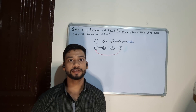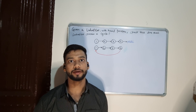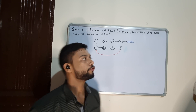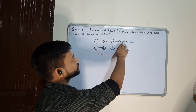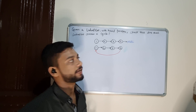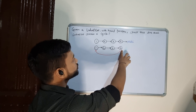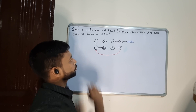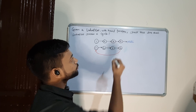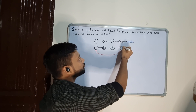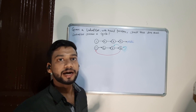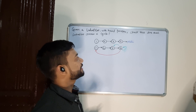The problem statement is: we are given a linked list with its head pointer and we need to tell whether that linked list contains a cycle or not. For example, in the first linked list the last node is pointing to null, so we can say that this linked list does not contain a cycle. But in the second example the last node is pointing back to the first node, so this linked list contains a cycle. So if the last node is pointing to any other node — itself or some node other than null — then that linked list contains a cycle.